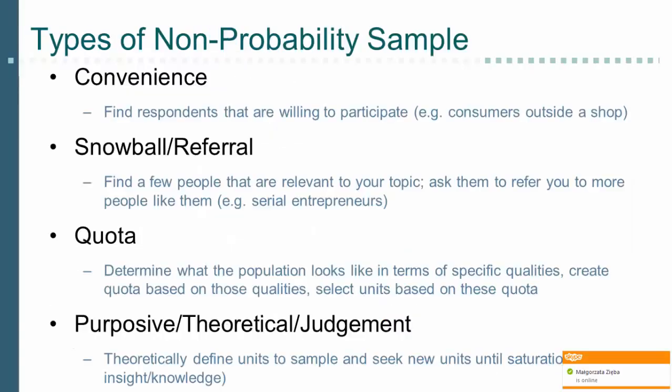In non-probability sampling, some elements have either zero probability of being selected or the probability is unknown. As a consequence, we cannot accurately determine the margin of error and it is impossible to say what the likelihood is of the sample being representative of the population. Although the risk of bias is high, convenience samples are used very often — sometimes it's simply impossible to obtain a sampling frame, and in other cases the effort and expense are just not worth it.